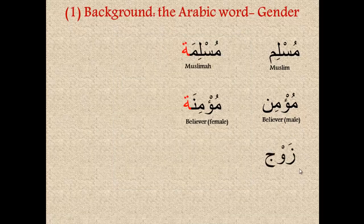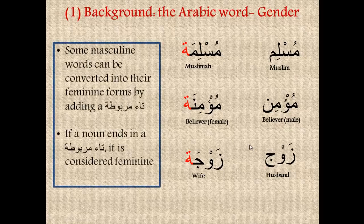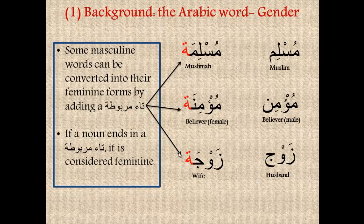And last but not least, we have the word zawj, which means husband in Arabic. If we add a tamarbutah to the end, we get zawjah, which means wife. So we notice that the tamarbutah at the end of these words makes them feminine, and we can convert the masculine version into its feminine counterpart by adding a tamarbutah to the end. Now, this isn't always the case.